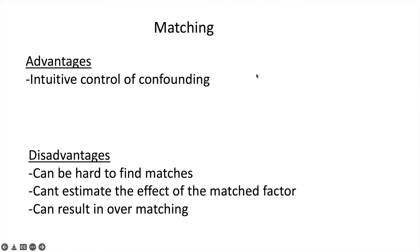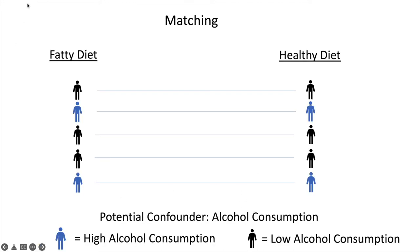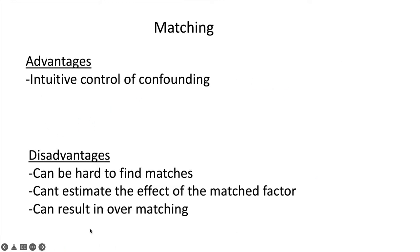Matching is intuitive for controlling confounding, but it has some limitations. It's rarely justified to match, it can be hard to find matches, and as soon as you're matching you can't measure the effect of the matched variable — you force it to be equal in the two groups, so you're not going to be able to find that measure of effect since you manipulated its distribution. It can also result in overmatching: if the thing you're matching on is almost completely correlated with the exposure, then you are essentially matching on exposure, which will force there to be no effect.